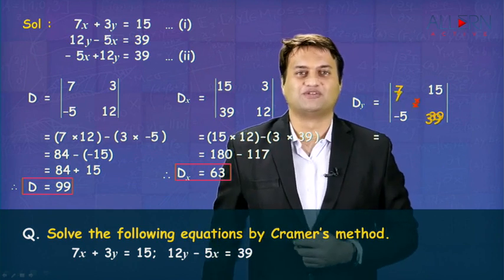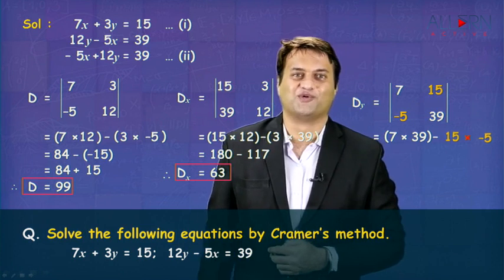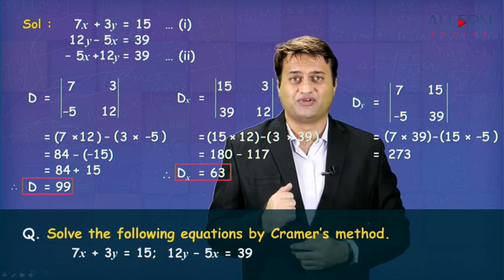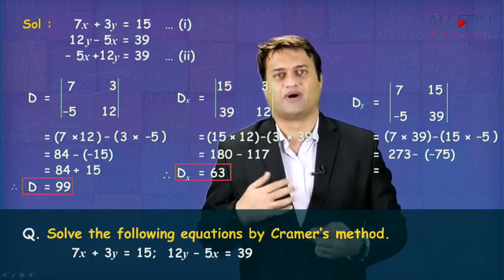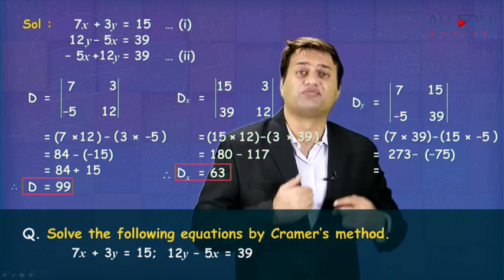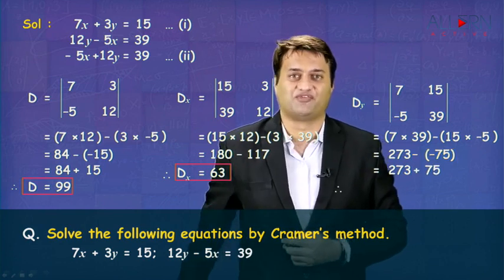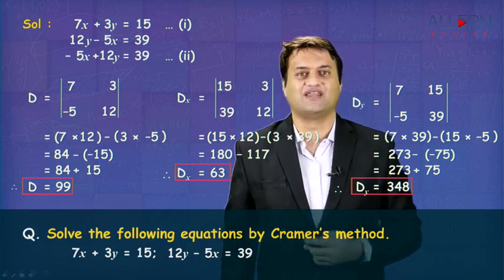Which is equal to 7 into 39 minus of 15 into minus 5. The first bracket is 7 into 39 which is 273. Second bracket is 15 into minus 5, that is minus 75. You get 273 minus of minus 75, that is 273 plus 75. And 273 plus 75 is 348.